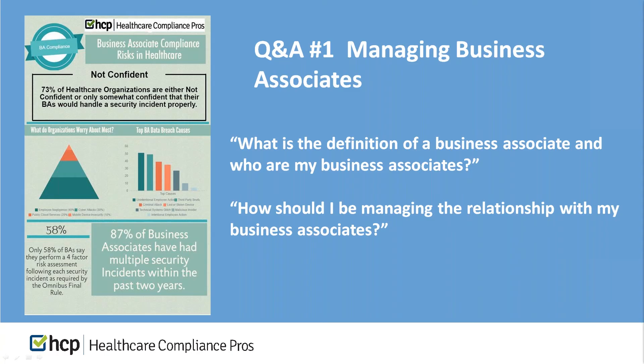Our first topic today is managing business associates. What is the definition of a business associate, and who are my business associates? We have received several questions from clients regarding how-to instructions on managing their business associates. A business associate is a person or entity that performs certain functions or activity that involve the use — such as creating, storing, or modifying PHI — or disclosure of PHI on behalf of the covered entity. That's really critical for organizations to be aware of.